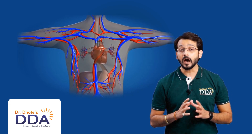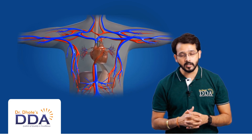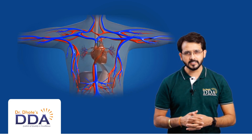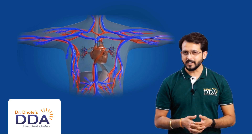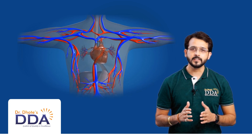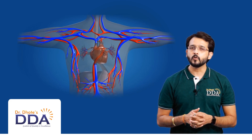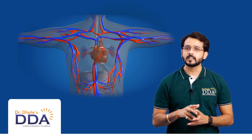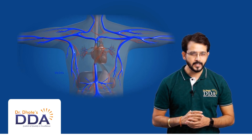It pumps around 7,200 liters of blood per day. Blood provides nutrients, oxygen, and water to different tissues and also carries metabolic waste away from the tissues. Blood flows within different blood vessels, i.e., arteries, veins, and capillaries.